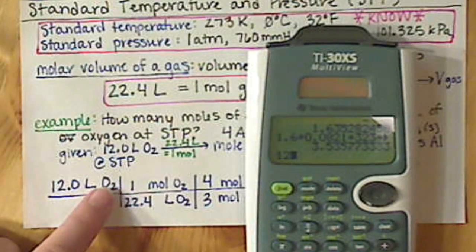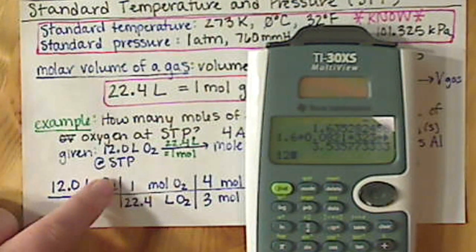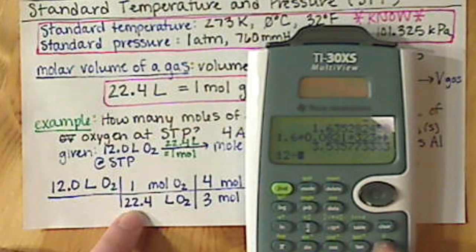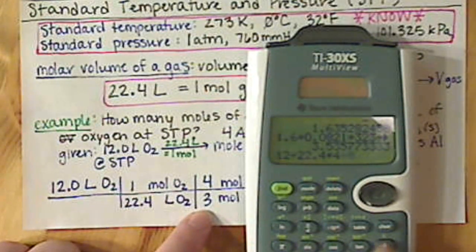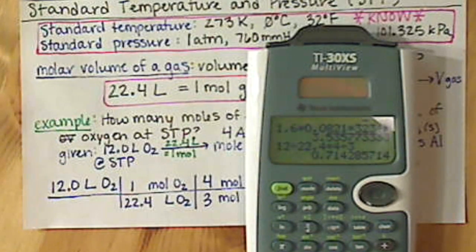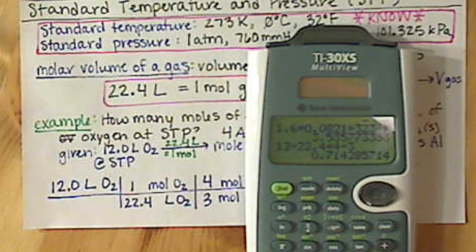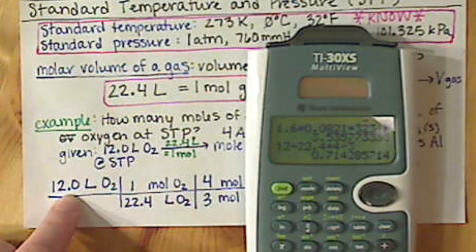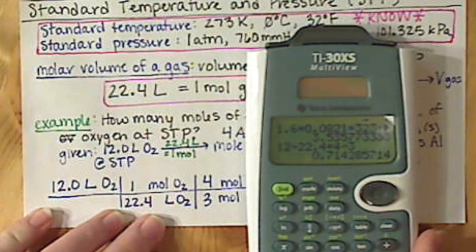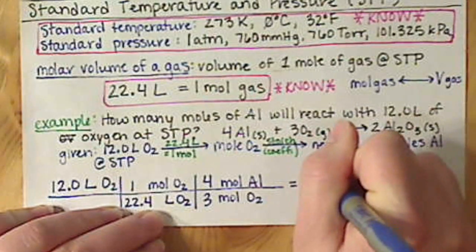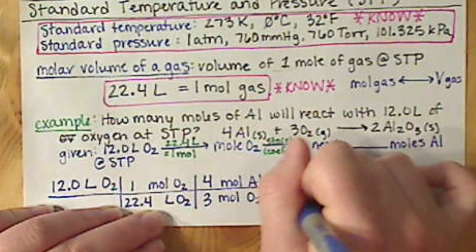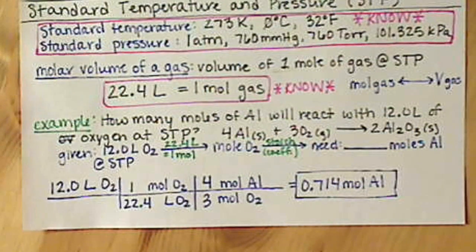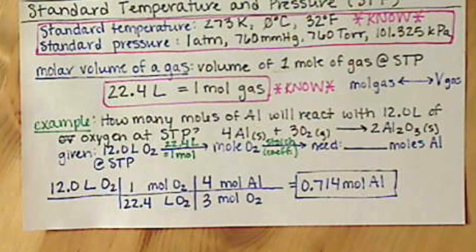And now I can set up my calculator here. I have 12, remember multiply cross, divide down, so I multiply by 1, don't really need to. I'm going to divide by 22.4, multiply by 4, divide by 3. My calculator gives me 0.714, I have 2857. I started out with 3 significant figures, so 0.714 is my final answer.